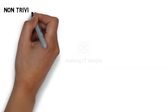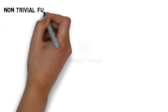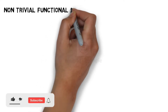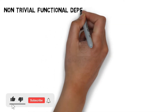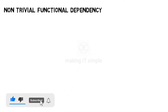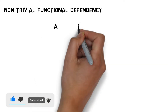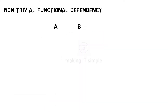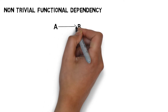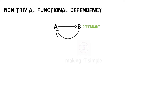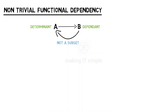Now let us see Non-Trivial Functional Dependency — it is just the opposite of Trivial. Again, consider a dependency A determines B. If the dependent B is not a subset of determinant A, then only this dependency is said to be a Non-Trivial Functional Dependency.